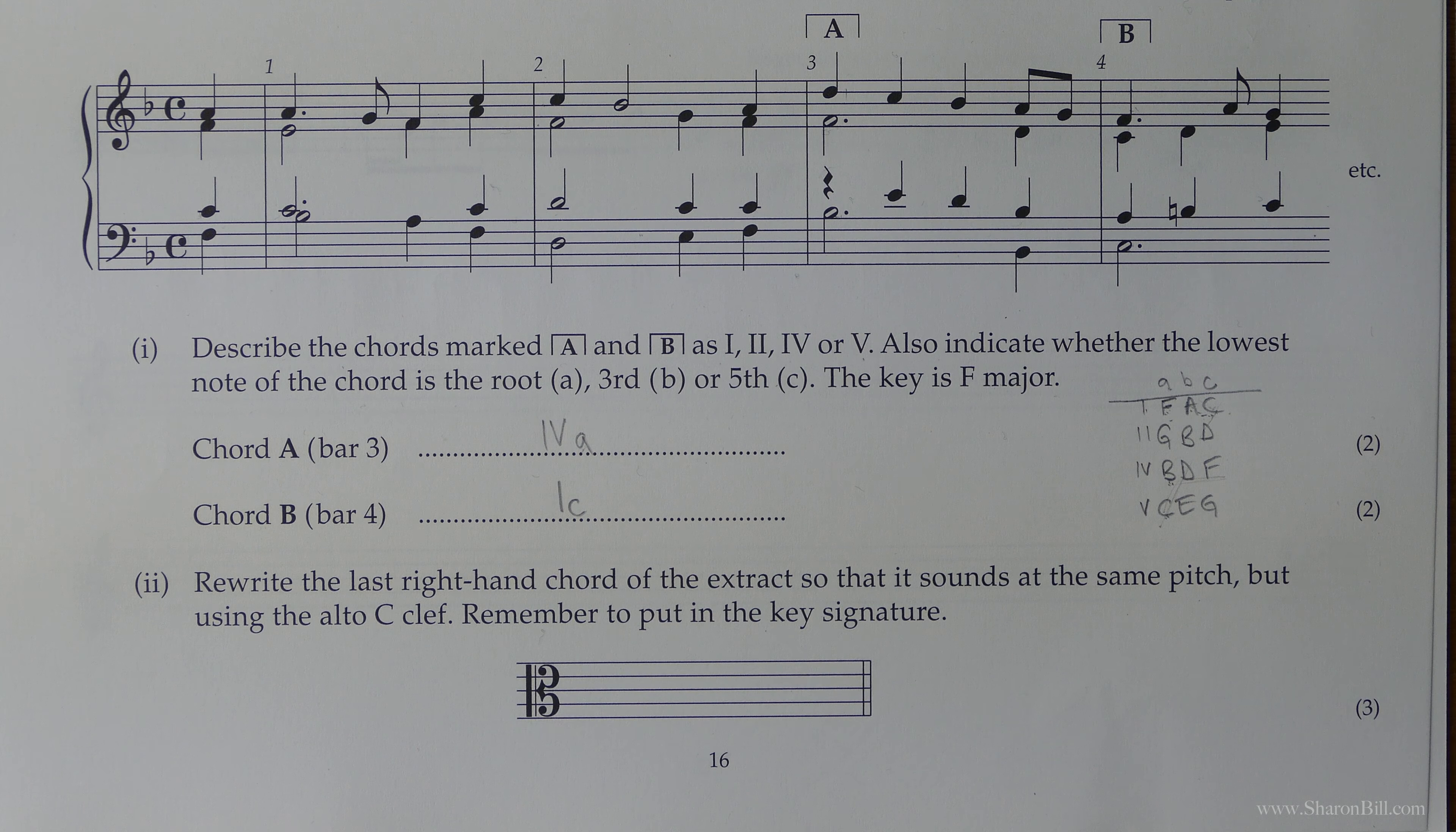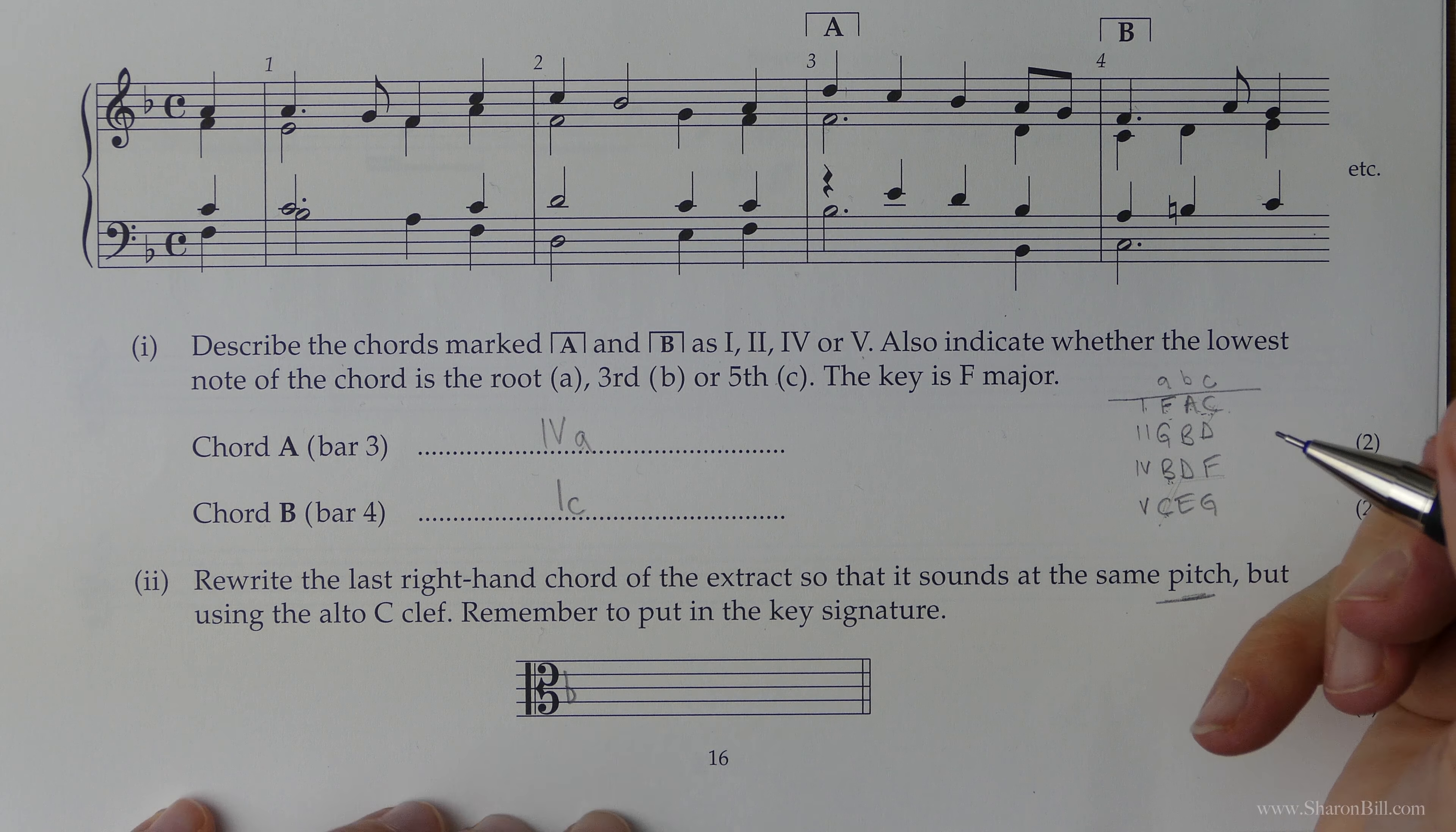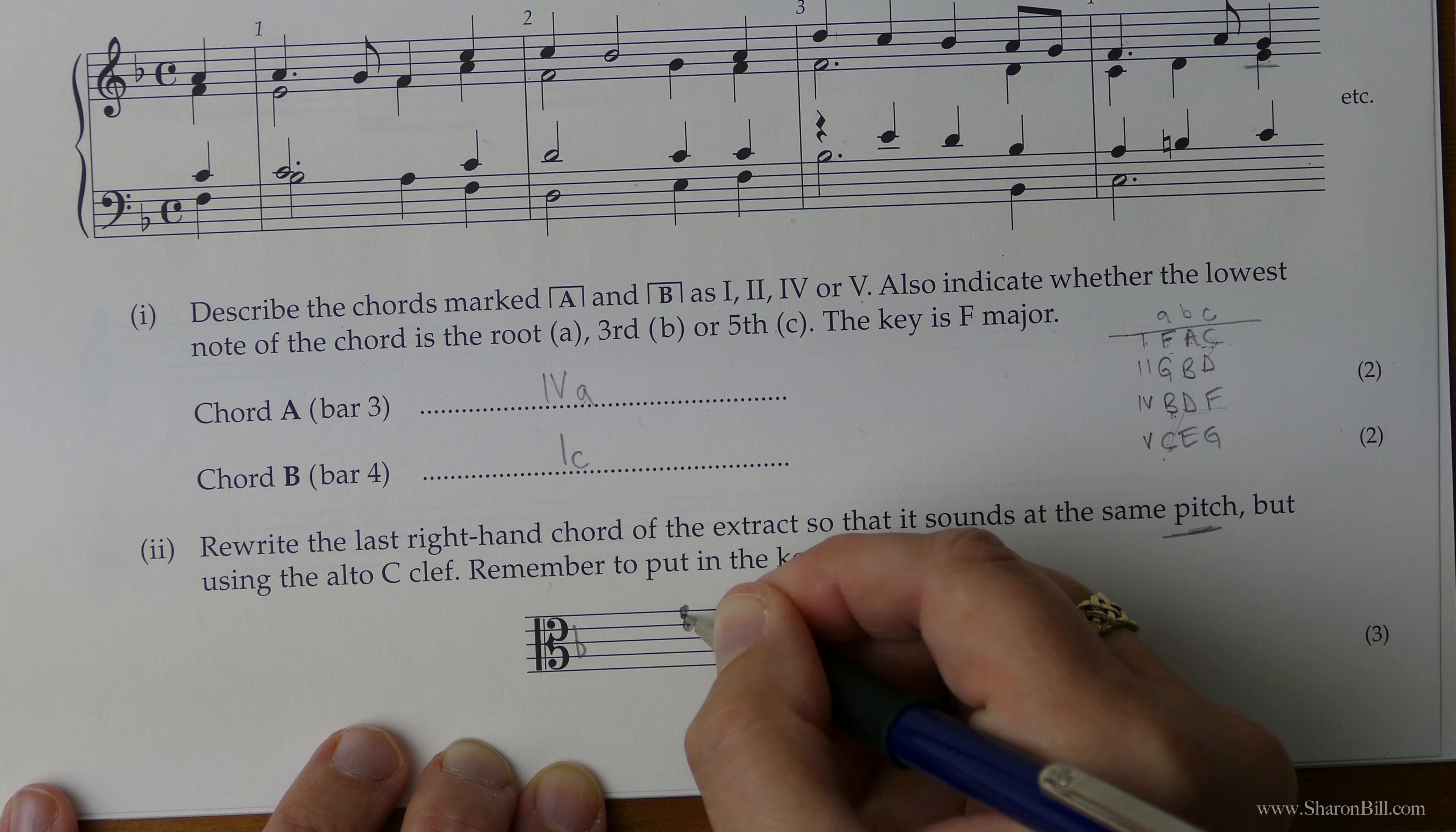So now we are asked to rewrite the last chord of the extract so that it sounds at the same pitch, but now using the alto clef. The important thing here is make sure you get the same pitch. Don't jump any octaves. Keep middle C as your anchor point. So remember to put in the key signature. So we've got B flat. So C, B flat. And then let's look at the chord that we're looking at. So the last right hand chord of the extract is here. So here's our reference point of middle C. C, D, E is one, two, three above, and then one, two, three above that. So C, D, E, that's our chord base here. The bottom of that is E above middle C. And then here is the third above, the G.